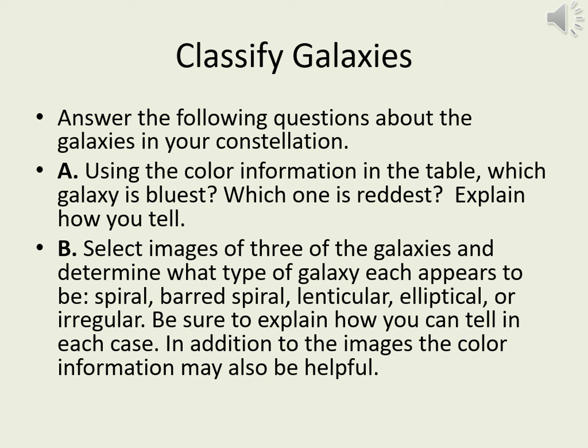In this question, we'll be using images and data from the constellation table to classify some of the galaxies into the major types. In a question like this, there's often room for interpretation, so it's very important that you make clear what evidence you're using to support your classifications. We'll be looking at pictures of the galaxies to help you make the classifications. All of the galaxy pictures are loaded online — check with your instructor to find out exactly how to find them.